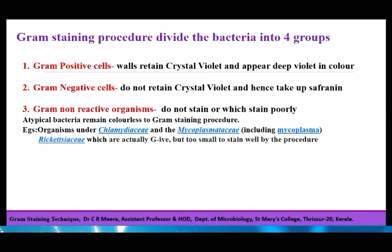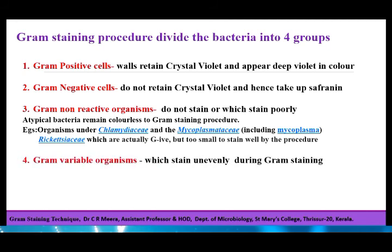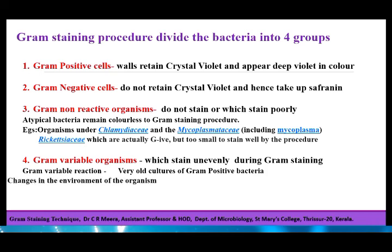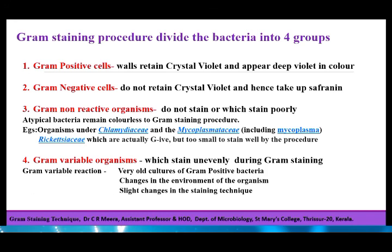Another example is Rickettsiae, which are actually Gram negative organisms but too small to stain well by the procedure. The fourth group is Gram variable organisms, which stain unevenly during Gram staining. Sometimes very old cultures of Gram positive bacteria lose their ability to retain the crystal violet-iodine complex and get decolorized during Gram staining, taking up safranin. Changes in the environment or slight changes in staining technique can cause the same problem. This phenomenon is called Gram variable reaction.